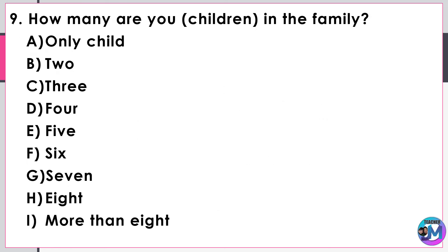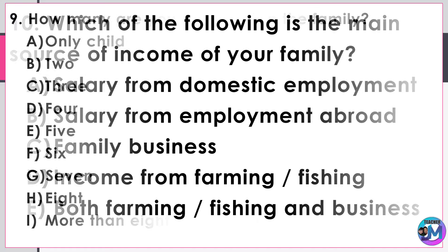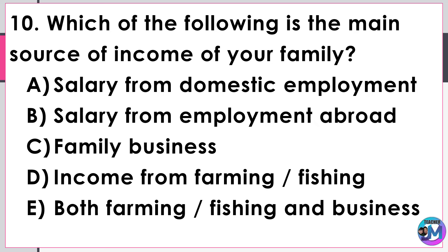Question 9: How many children are in the family? A) Only child, B) 2, C) 3, D) 4, E) 5, F) 6, G) 7, H) 8, I) More than eight. Question 10: Which of the following is the main source of income of your family? A) Salary from domestic employment, B) Salary from employment abroad, C) Family business, D) Income from farming or fishing, E) Both farming or fishing and business.